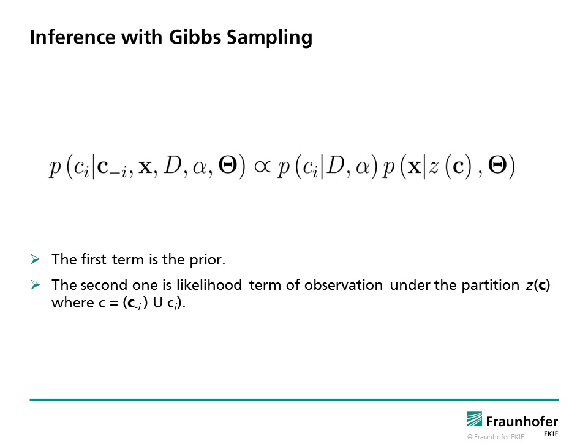Therefore, we use Gibbs sampling for the inference. We define the Markov chain by iteratively sampling each latent variable ci, conditioned on the others and the observation. Here, the first term is the prior, that shown in previous slides, and the second one is the likelihood.